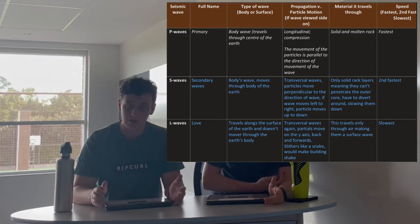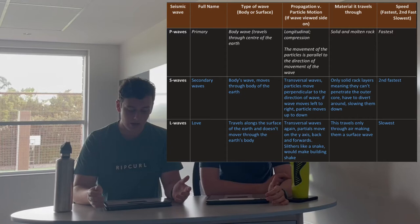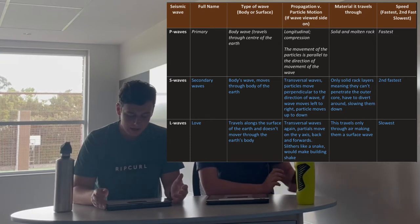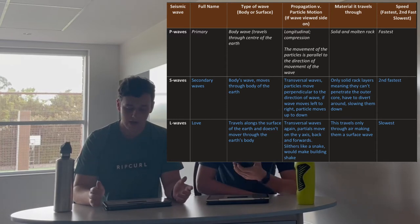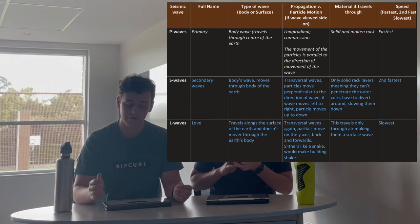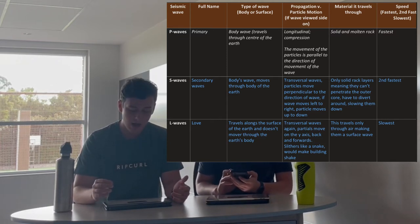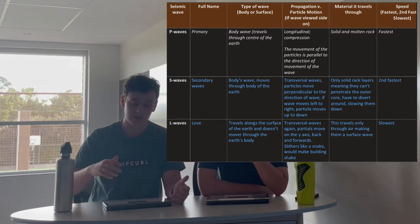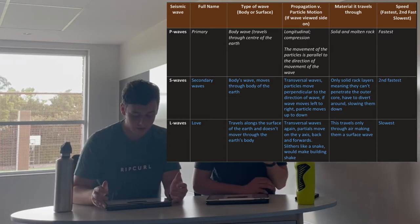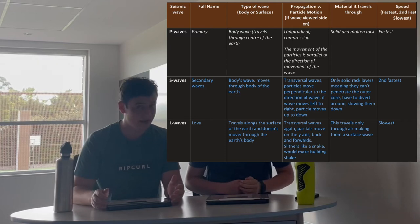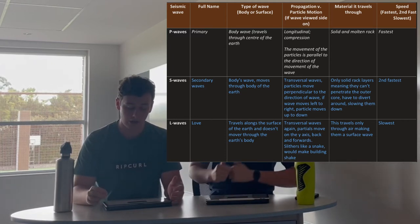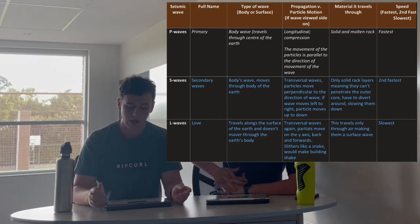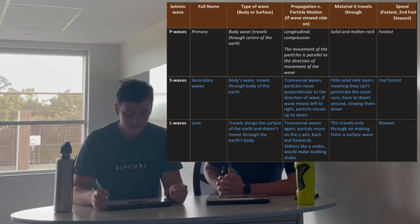We now compare primary, secondary, and surface seismic waves. There are three types. Primary waves, or P waves, are body waves that travel through the centre of the Earth. They are longitudinal waves, meaning particle movement is parallel to the direction of the wave. They can travel through solid and molten rock and are the fastest type. Secondary waves, or S waves, are also body waves but are transversal — particles move perpendicular to the direction of the wave. S waves can only move through solid rock, meaning they cannot penetrate the outer core, making them the second fastest.